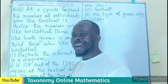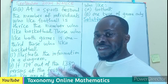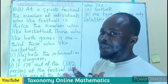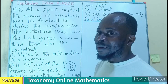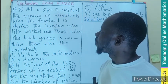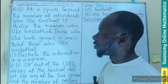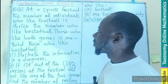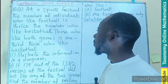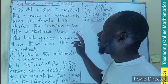I must recommend Waiyek for setting this beautiful two-set problem which involves a bit of algebra. Let's look at this — it's the September 2024 1C question paper. At a sports festival, the number of individuals who like football is twice the number who like basketball. Those who like both games is 110.